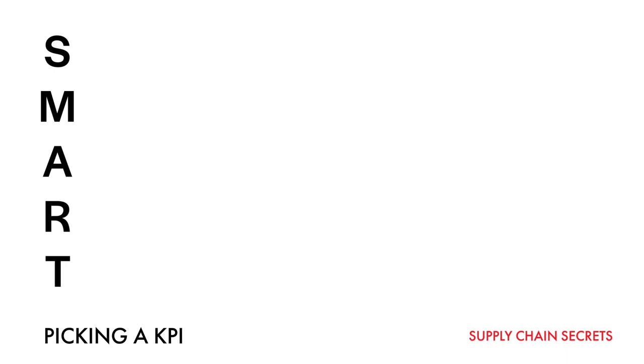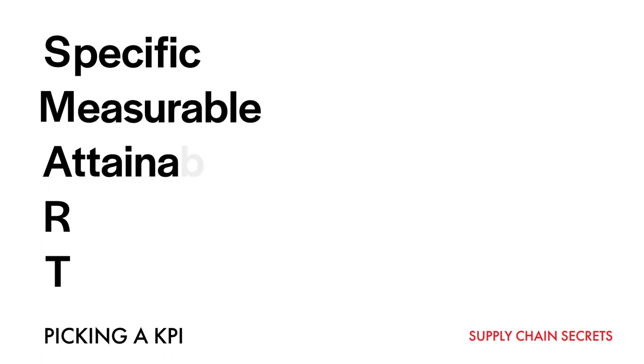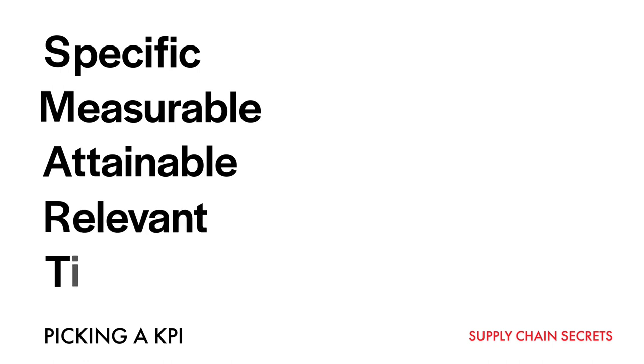There is a very simple acronym for KPIs, which is SMART. A KPI should be Specific, Measurable, Attainable, Relevant, and Time-based. Time-based means things like so many activities per hour, or how many hours it takes to do something. You've got to be able to get the data and measure it. But SMART doesn't tell you what to measure — it just tells you the characteristics of a good KPI.